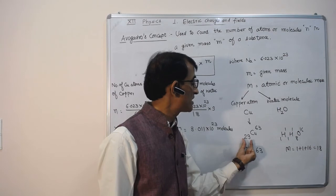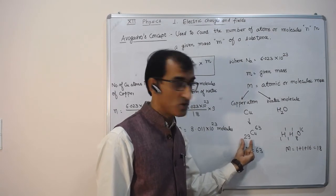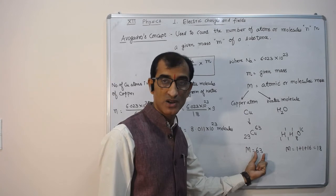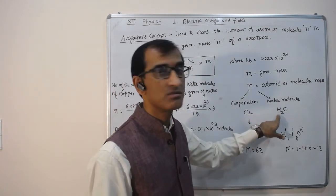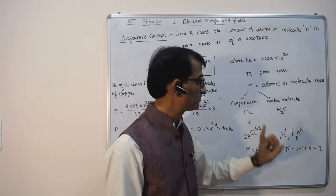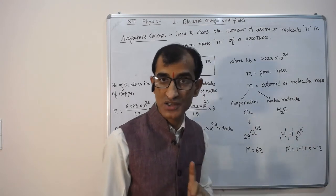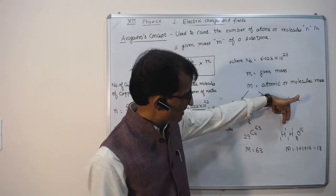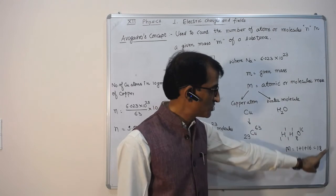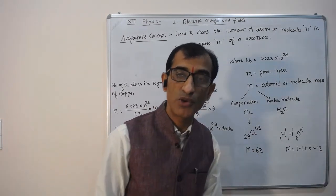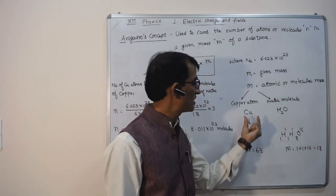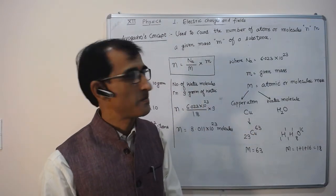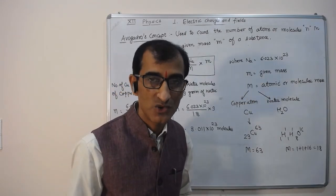For copper in atomic form, the atomic mass is 63. For molecular form, consider water: H₂O means 2 hydrogen atoms and 1 oxygen atom. Hydrogen has mass number 1, so two hydrogens give 1 + 1 = 2, and oxygen has mass 16. Adding these: 1 + 1 + 16 = 18. So the molecular mass of water is 18. The atomic mass of copper is 63.